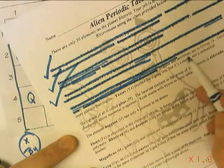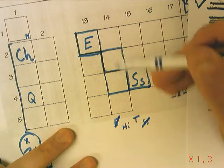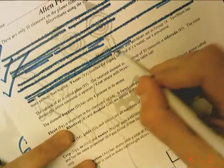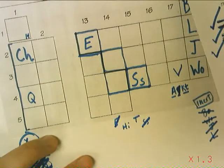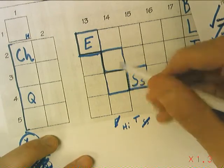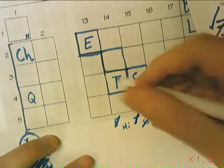HI-HO and TERROBLUM are in group 14. TERROBLUM has more protons than HI-HO. That means TERROBLUM is heavier. And HI-HO is here.